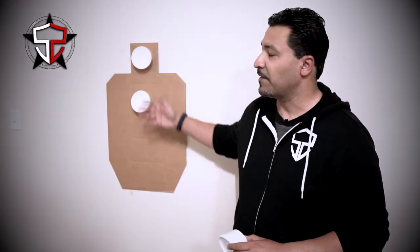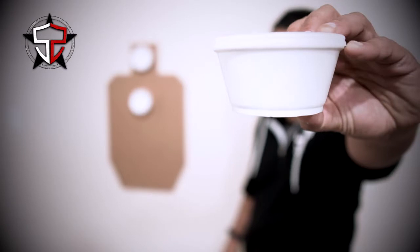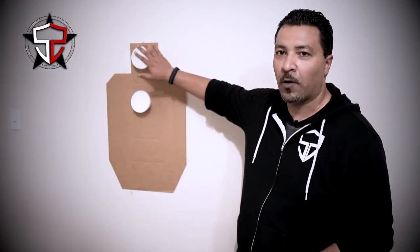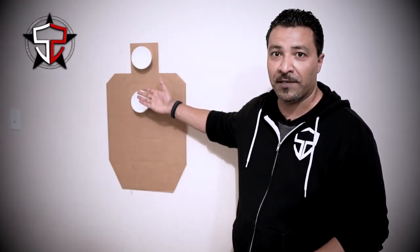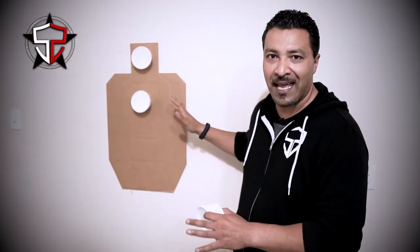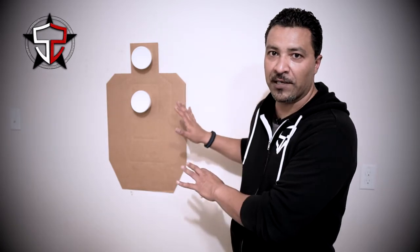Then you'll see that I have these styrofoam cups taped to the wall or taped to the target. One in the center mass, one in the ocular cavity. Center mass obviously that's our primary type of target, and if we need to take a precision shot then we move into that brain box zone. So that's what we have going on, and again you could set this up however you guys want to.